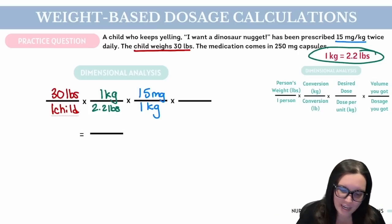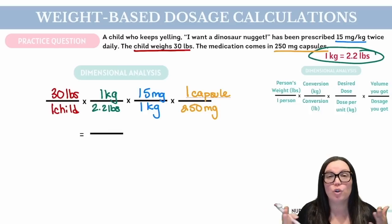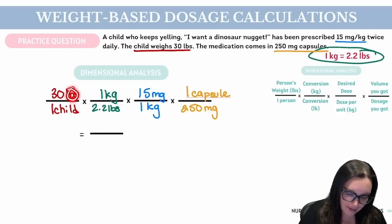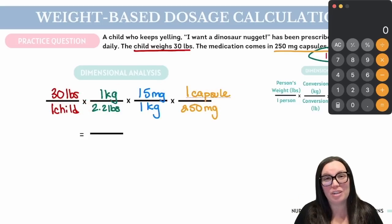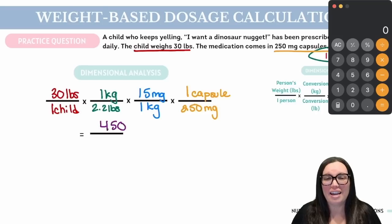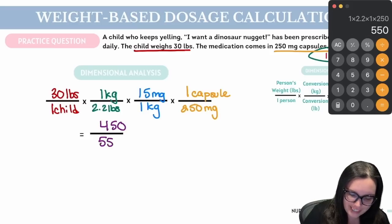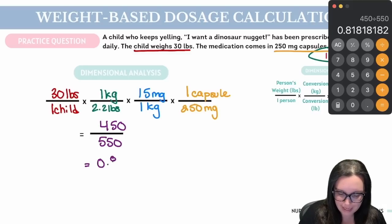Lastly, what do we have available? We know that we have 250 milligrams per one capsule. Lining it up, I'm going to put my 250 milligrams on the bottom and my one capsule on the top. If we lined everything up correctly, we should only be left with how many capsules we're going to give the child. Pounds cancels out pounds, kilograms cancels out kilograms, milligrams cancels out milligrams, and we're only left with capsules per child. Multiplying the top: 30 × 1 × 15 × 1 = 450. For the bottom: 1 × 2.2 × 1 × 250 = 550. Dividing: 450 ÷ 550 gives us 0.82 capsules.